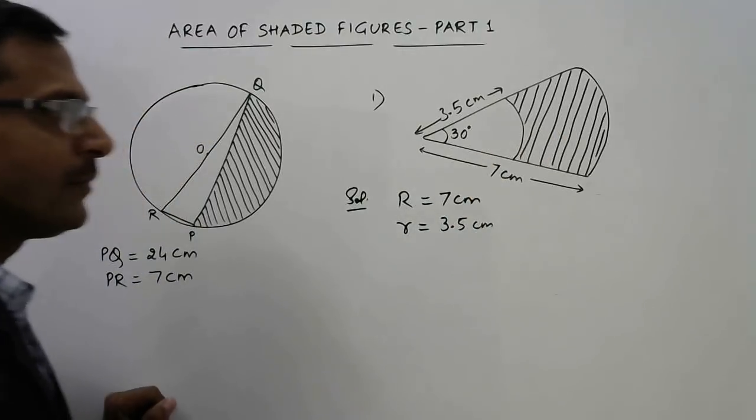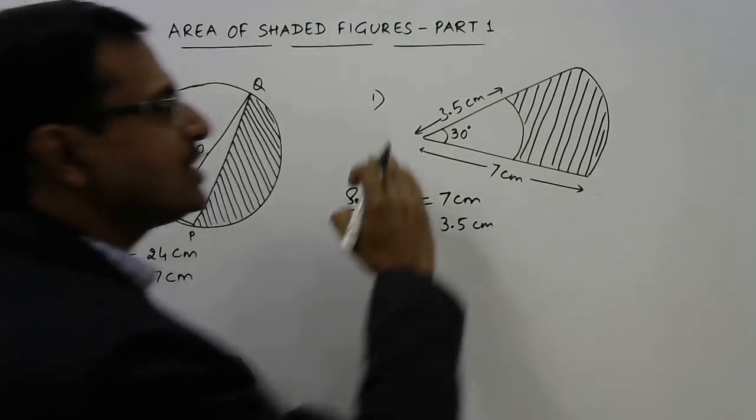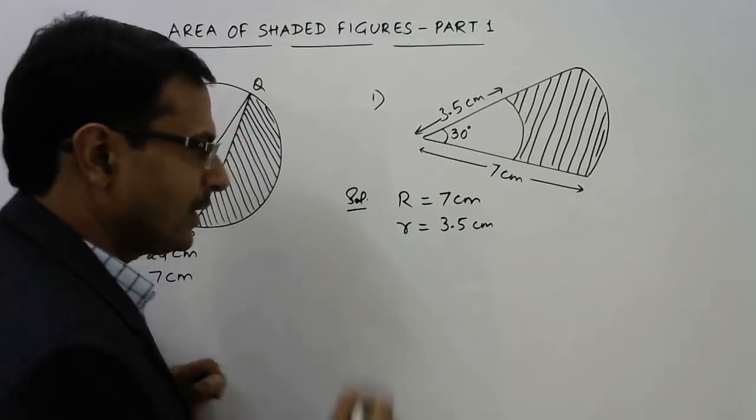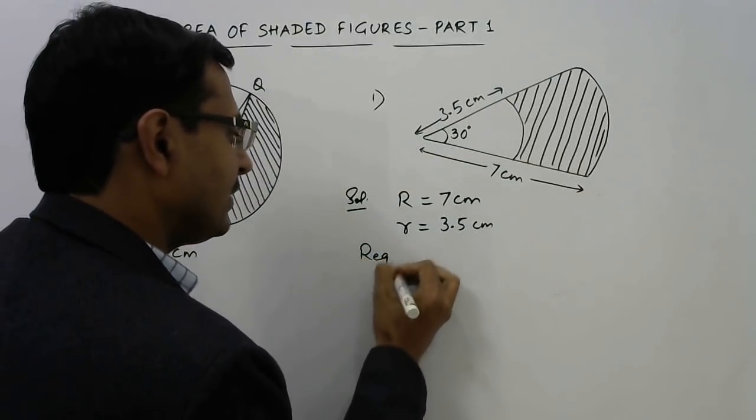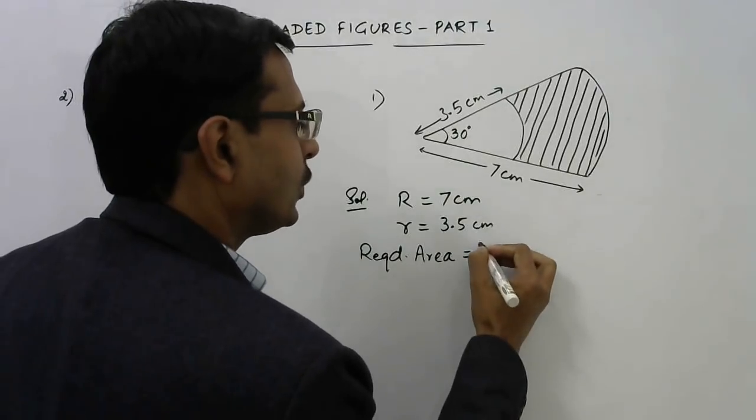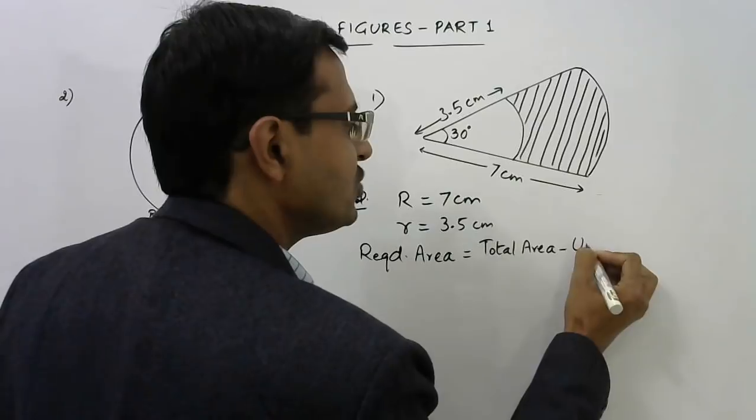To find the required area which is shaded here, you just need to find the total area and subtract the area of the unshaded portion from this. So required area will be equal to total area minus unshaded area.